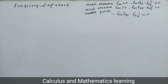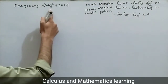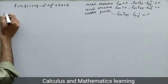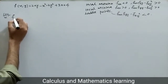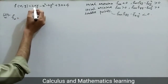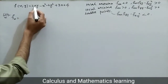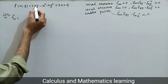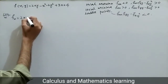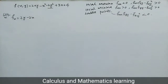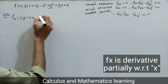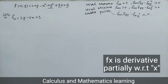Coming to our question: f(x, y) equals 2xy minus x squared minus 2y squared plus 3x plus 4. We will find the partial derivative with respect to x. Here 2y is a constant, so the derivative of 2xy with respect to x gives 2y, derivative of minus x squared gives minus 2x, minus 2y squared gives zero, derivative of 3x gives 3, and the constant 4 gives zero.